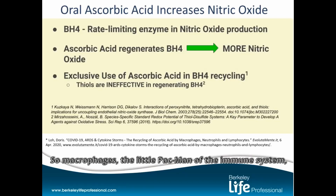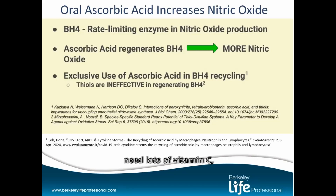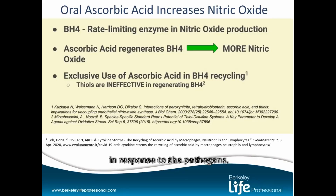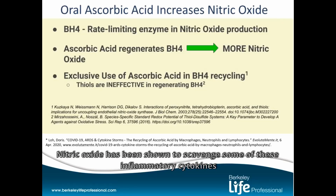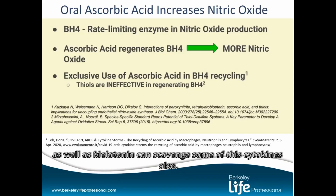Macrophages — the little pac-man of the immune system — need lots of vitamin C and nitric oxide in order to do their job in response to pathogens. The macrophages also produce the cytokine storm. Nitric oxide has been shown to scavenge some of these inflammatory cytokines, and melatonin can also scavenge some of them.